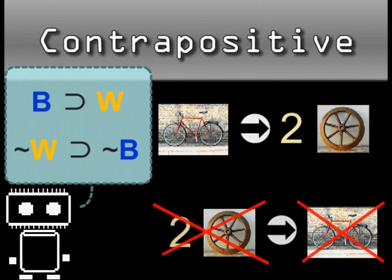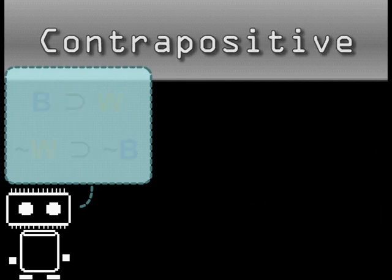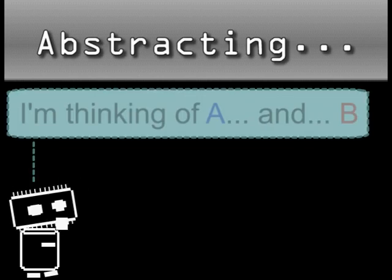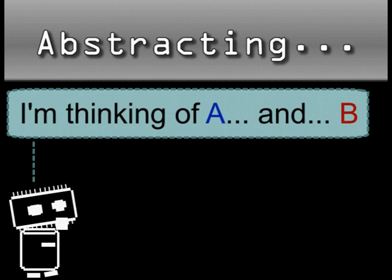It's not good logic if we can't abstract these structures to other instances. Using any two propositions, A and B, where A implies B, we can get to the inverse, the converse, and the contrapositive this way.